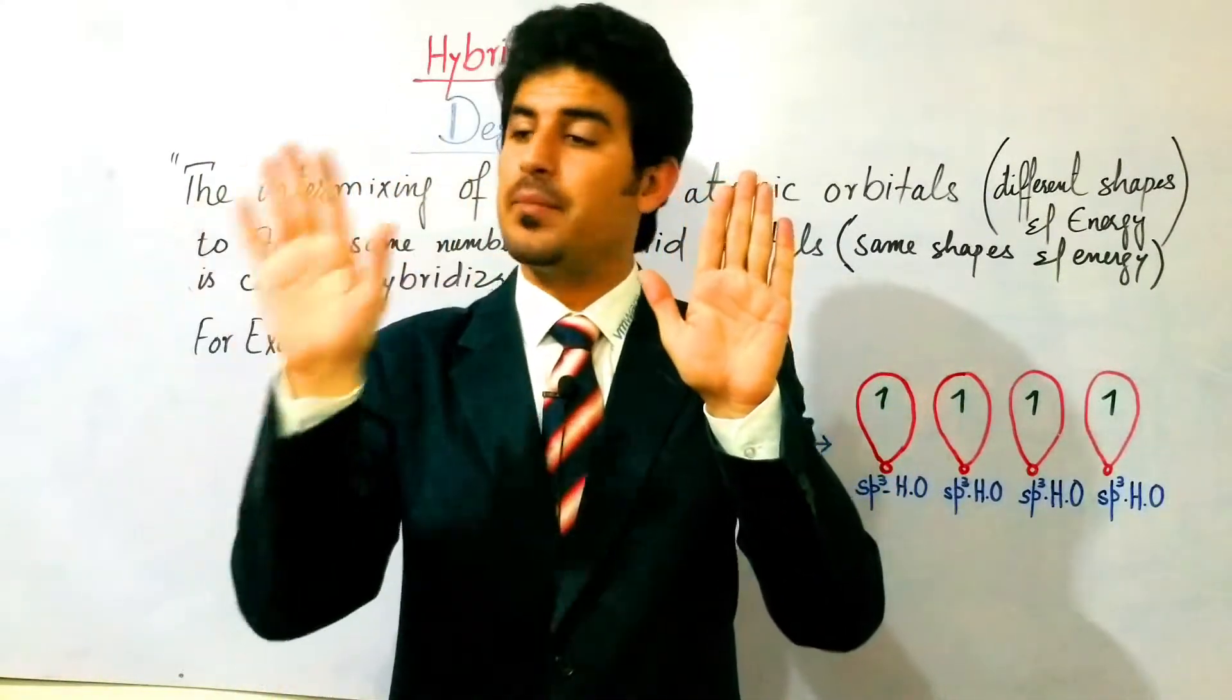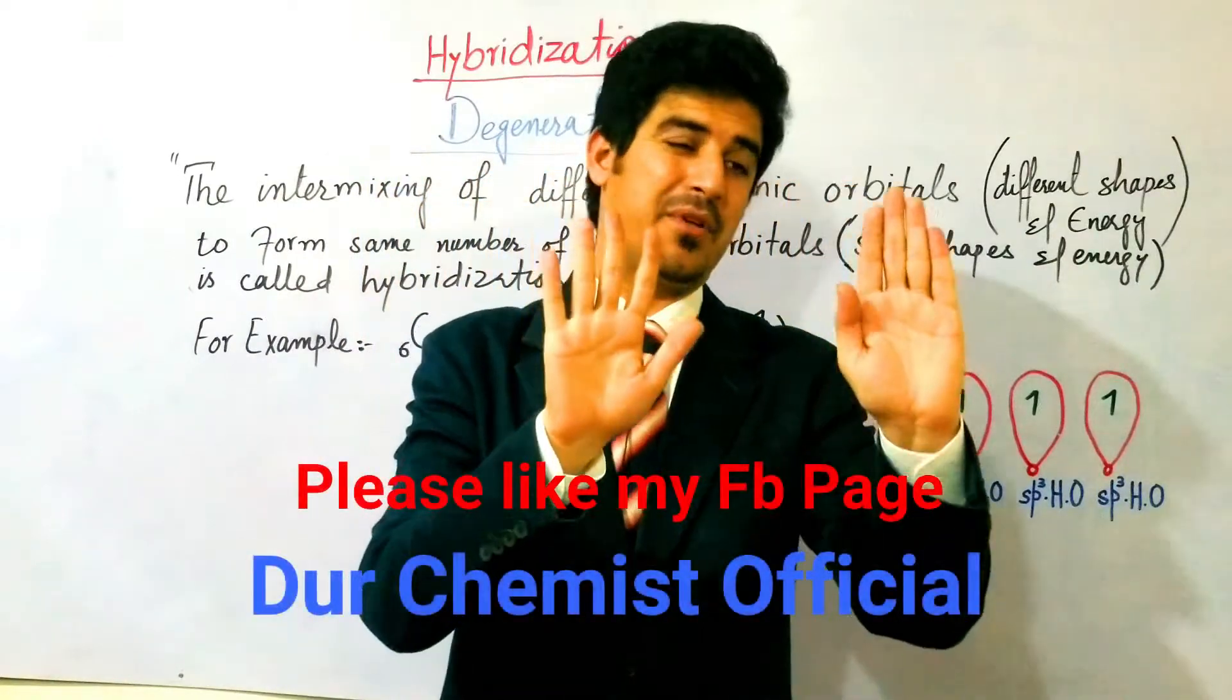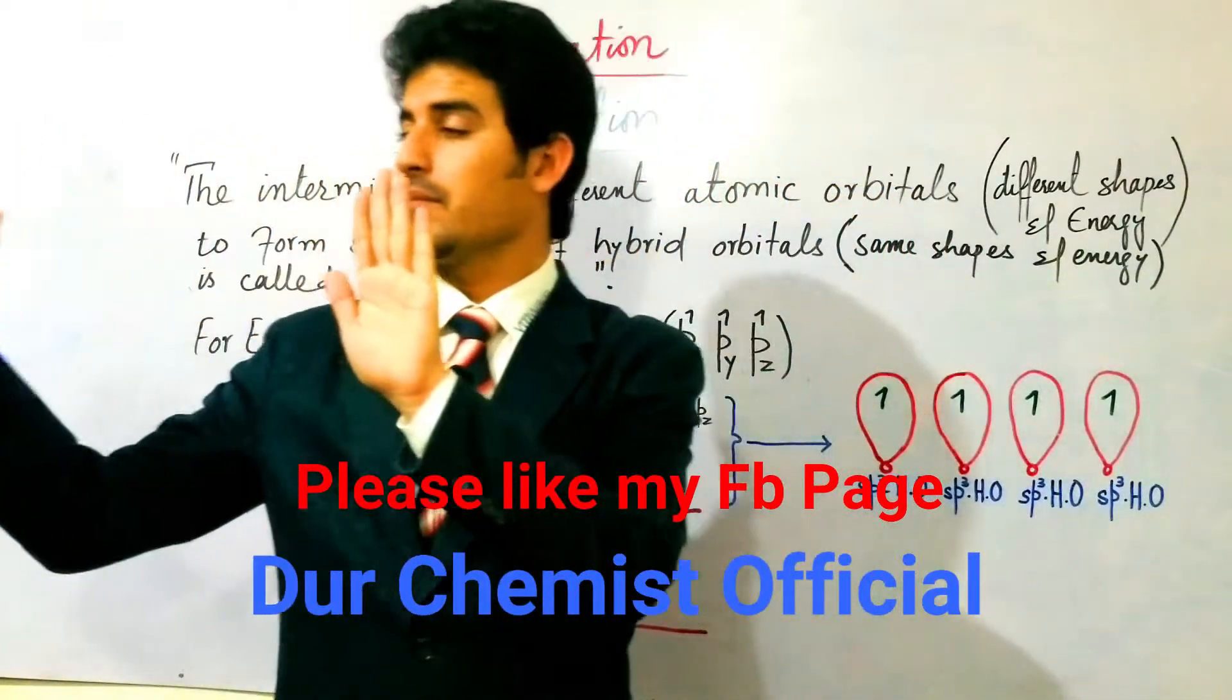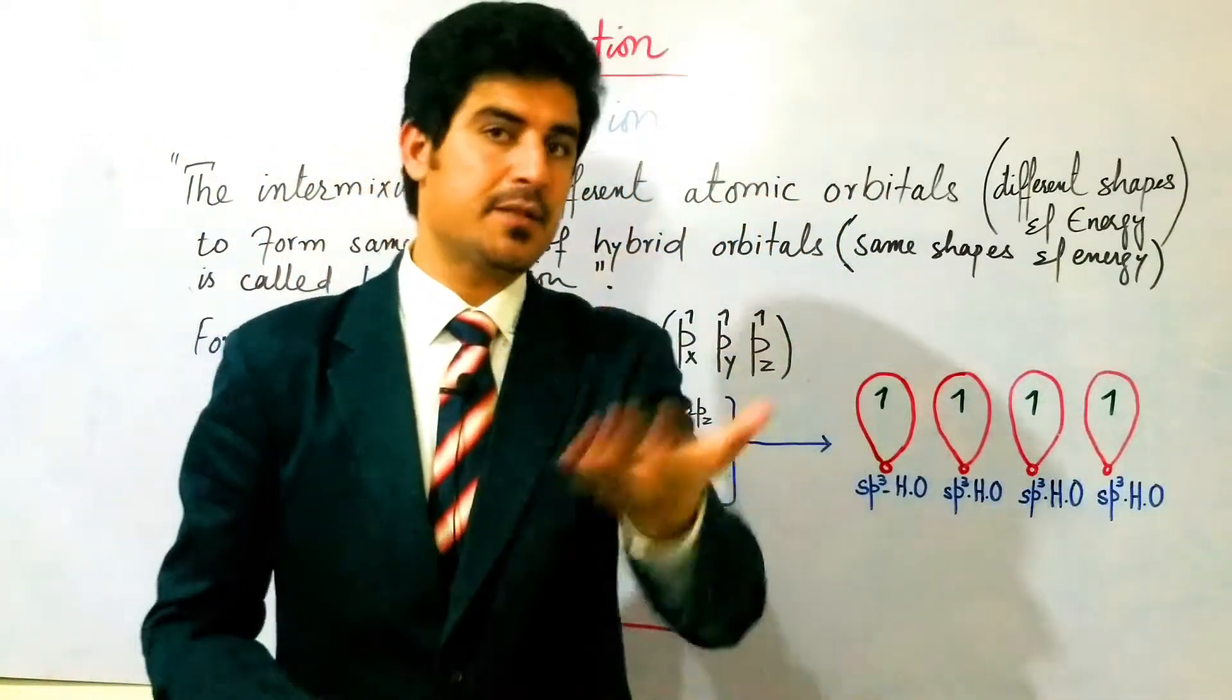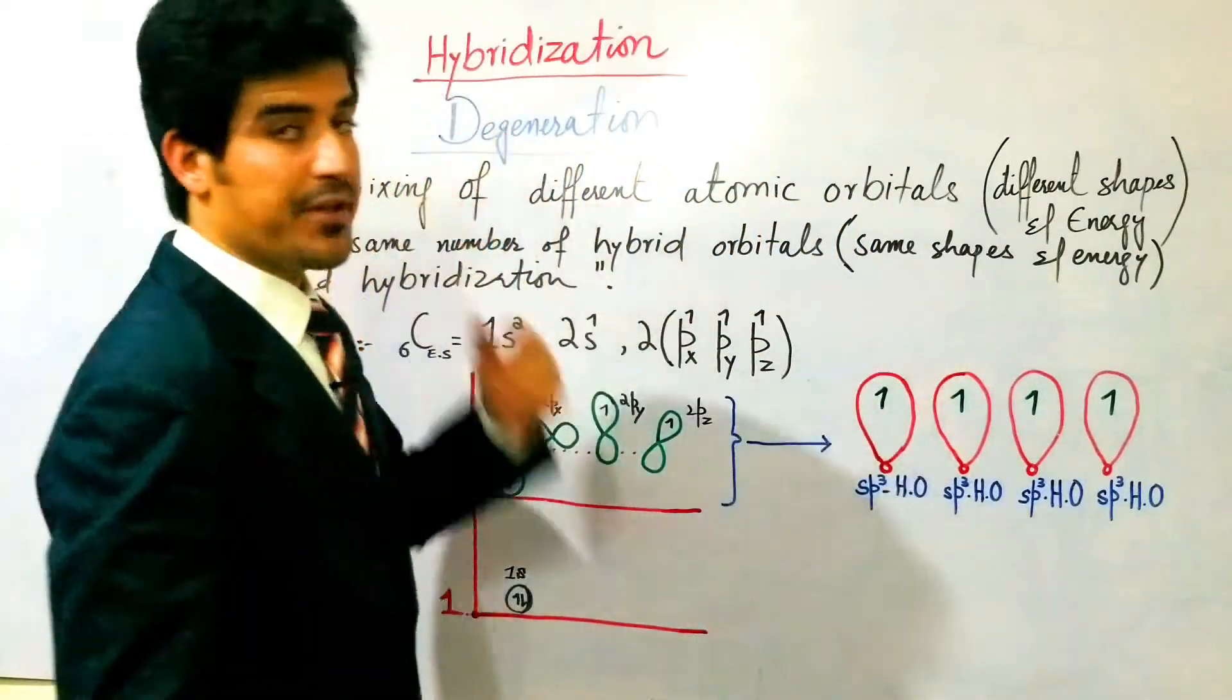Hybrid orbital means degenerate orbitals. Degenerate means same energy and same shapes. This process is called the hybridization process.